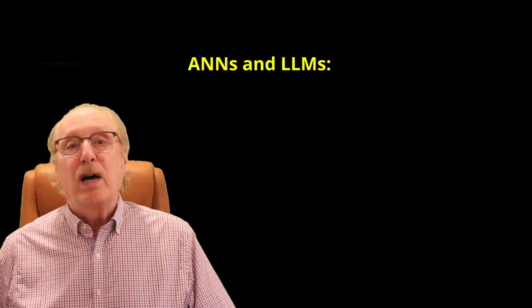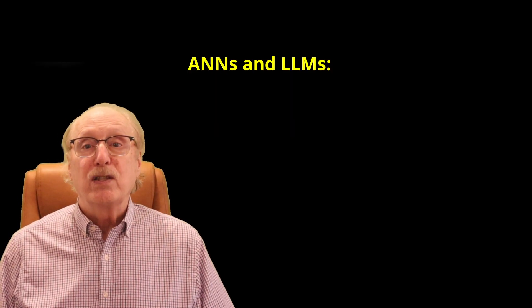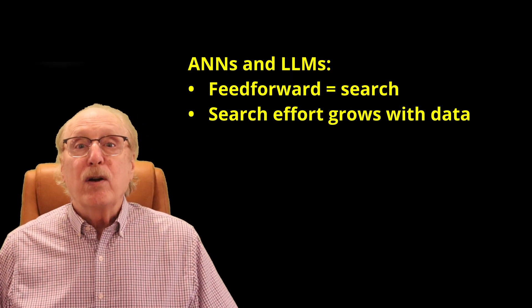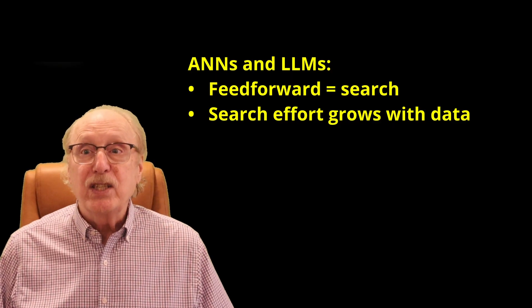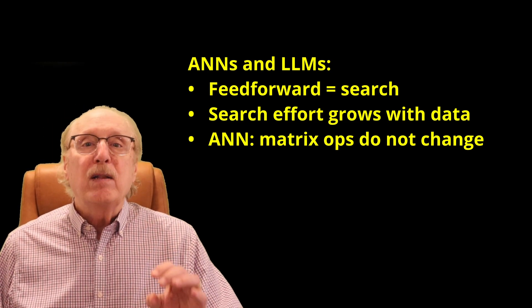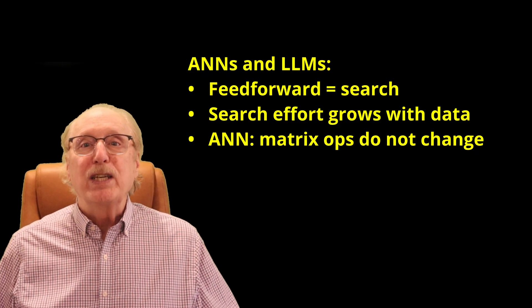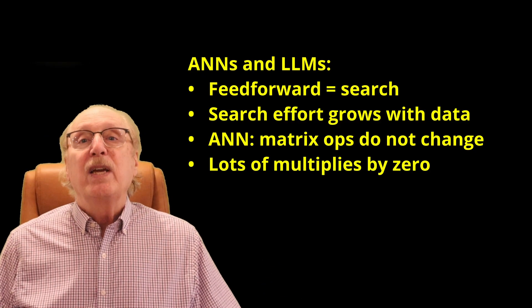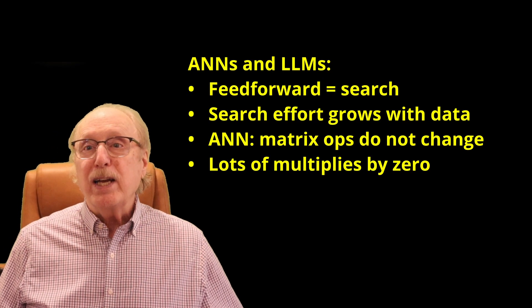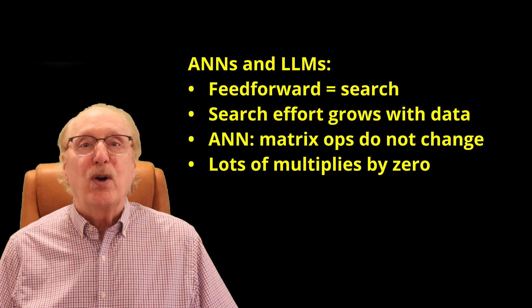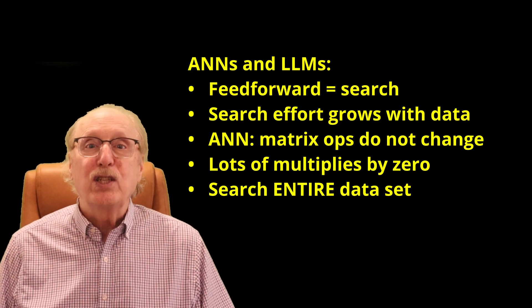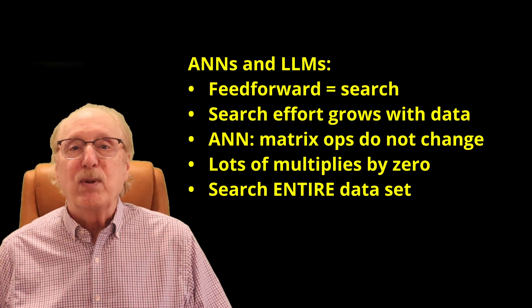This stands in stark contrast with today's artificial neural networks and large language models. ANNs and LLMs require vast amounts of computation for every search or inference. Their cost grows with the token count, the dataset size, the model size, and the length of the context window. Why? Looking at a simple example of a neural network, clearly it does the same number of matrix multiplication operations regardless of the number of inputs which are activated. Even though many of these multiplications are by zero, GPUs have been optimized for multiplication to such an extent that multiplying by zero is just as costly as multiplying by other numbers. In essence, the ANN searches its entire knowledge base for every input pattern, regardless of how simple or complex that pattern is.